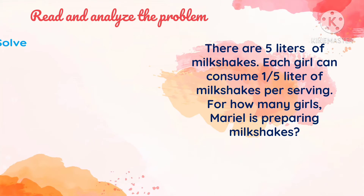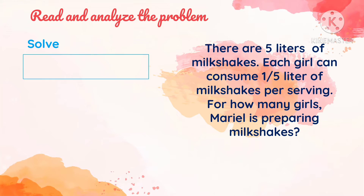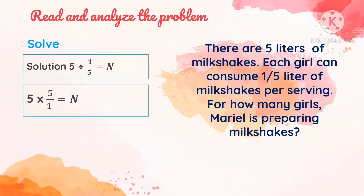We can now solve the problem since we already have our number sentence: 5 divided by one-fifth is equal to n. The first step in dividing a simple fraction is we change — we get the reciprocal of the divisor. So here, our divisor is one-fifth, so we get its reciprocal, which is 5 over 1.